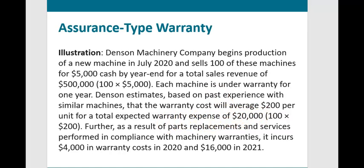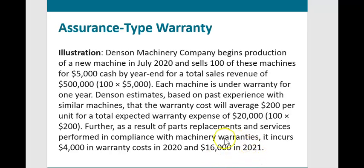Each machine is under warranty for one year. Denison estimates based on past experience that warranty cost will average $200 per unit — total warranty expense of $20,000. The company incurred $4,000 of warranty costs in 2020 and an additional $16,000 in 2021. The question is: are the 2021 costs included as expense in 2020, or are they an expense in 2021?